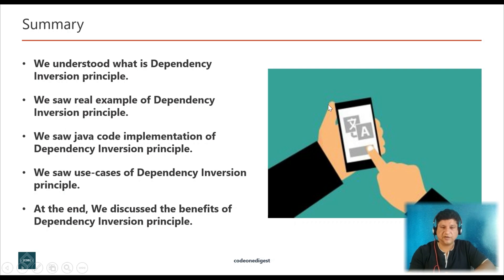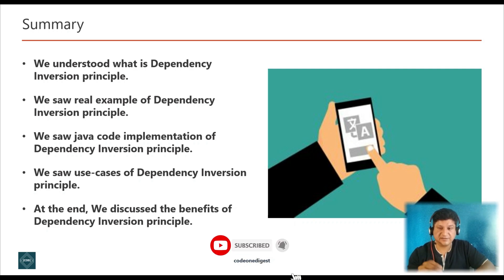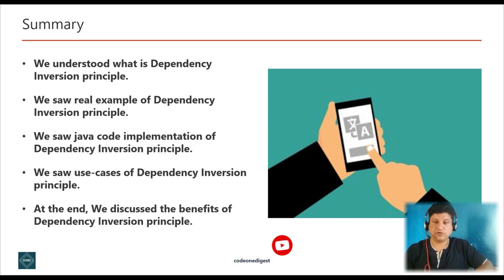Now let me summarize what we learned in this video. We understood what is Dependency Inversion Principle, we saw a real world example, we saw a Java code implementation, we understood the use cases, and we discussed the benefits. Let me know if you have already used Dependency Inversion Principle in your project or seen a scenario where this principle can be very useful — please provide your answer in the comment section.